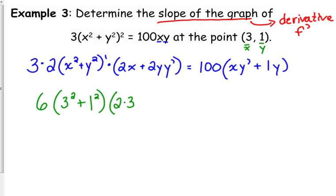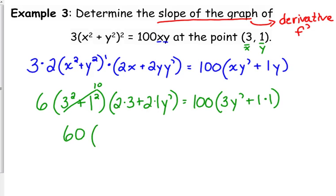So I'm going through and I'm plugging in 3 for all my x's and 1 for all my y's. So y prime stays because that's the slope of the graph. 3 is x, 1 is y, and I'm going to simplify from here. Let's see here. 3² is 9 plus 1², so that's 10. So that's 60 right here. And in parentheses, we have 6 plus 2y prime is equal to 100 times (3y prime plus 1).